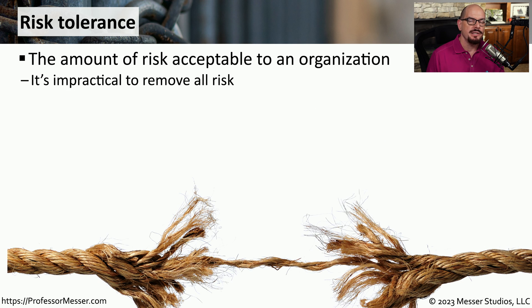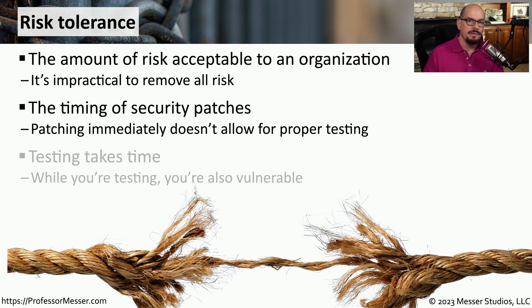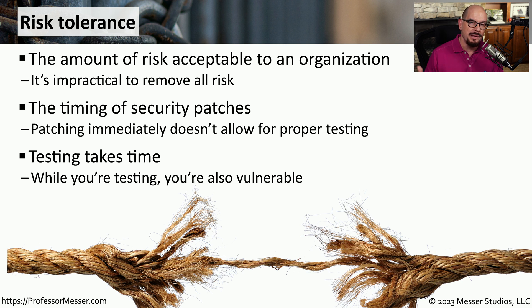One of the challenges of managing security patches is that you can't patch all devices at the same time. You have to set some type of priority over which patch is installed first, which is installed second, and so on. The process of determining which device may be more important depends on how risky it is to have that vulnerability exist on that device. We refer to this prioritization as a risk tolerance — it describes how much risk an organization is willing to accept by having a particular vulnerability still unpatched. We can't deploy a patch until we know it will work properly in our environment, and that requires a great deal of testing, during which we remain vulnerable.